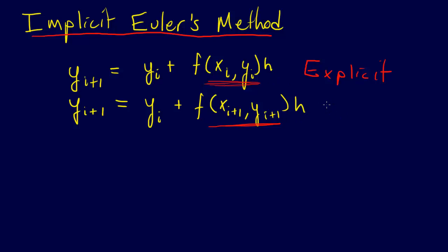And again, both of these are multiplied by h. And this is an implicit formula. This is implicit Euler's method.